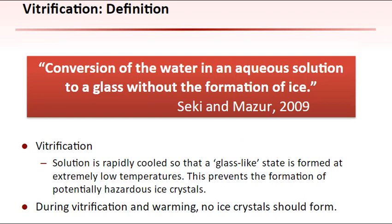Although there are several methods for cryopreserving cells, oocytes and embryos primarily are cryopreserved by either slow freezing or by vitrification. Vitrification is defined as the process of the conversion of water in an aqueous solution to a glass without the formation of ice. Other methodologies will not be discussed here.